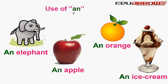'An' is used before words whose beginning letter is a vowel. For example: